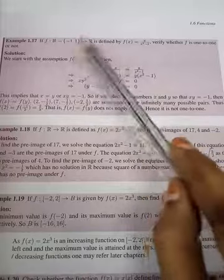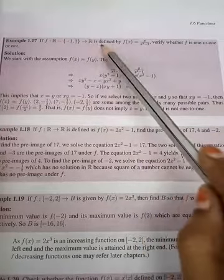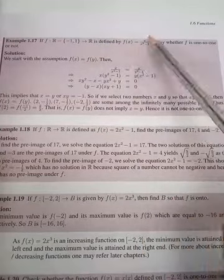To R - this is the domain, co-domain is R - is defined by f(x) equals x by x squared minus 1. Verify whether f is 1 to 1 or not.